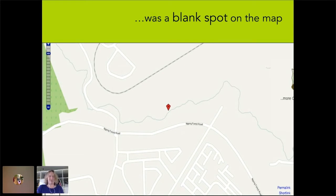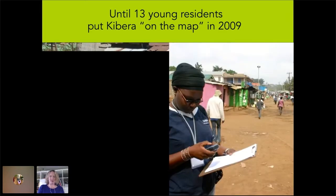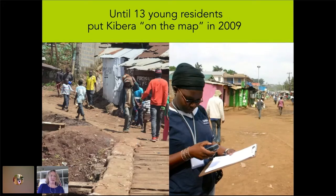OpenStreetMap, also known as the Wikipedia of maps, is a world map that anyone can edit. Kibera was also a blank spot on any publicly available map, including early Google Maps and basically anything — you just couldn't find it on maps. That's when my partner and I went to Nairobi and trained 13 youth that lived there to use the OpenStreetMap toolset to put Kibera on the map.